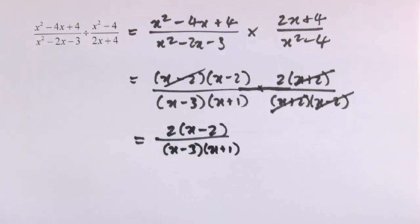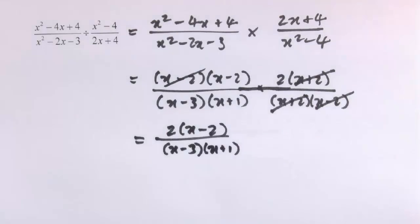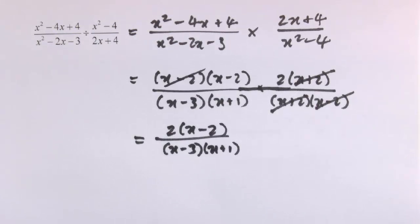A fairly complicated example, but we're doing the same thing throughout: if it's a division, turn the second one upside down and multiply, then factorize everything and find common factors top and bottom to cancel out.